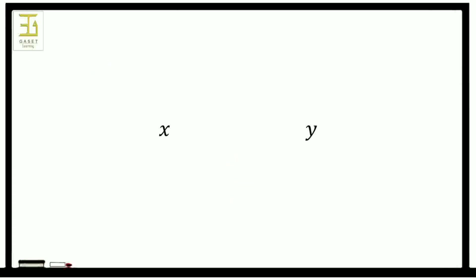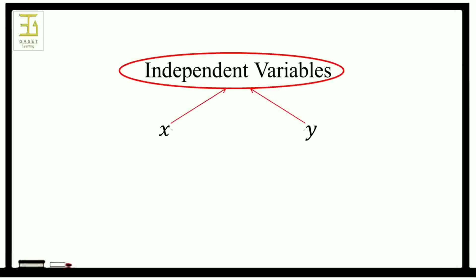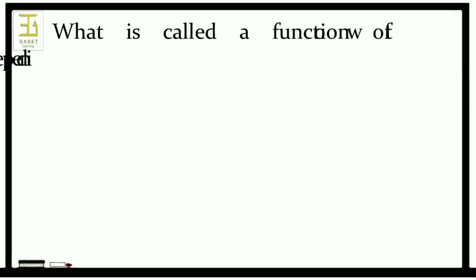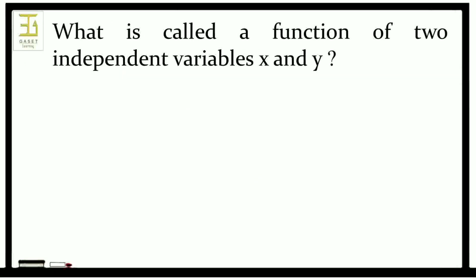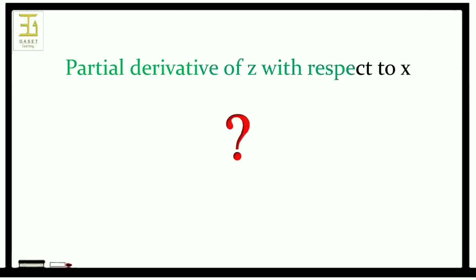To explain in detail, we first need to check the function of two independent variables x and y. A simple z which has a definite value for every pair of values of x and y is called a function of two independent variables x and y, and we write z equal to f of x, y or phi of x, y.